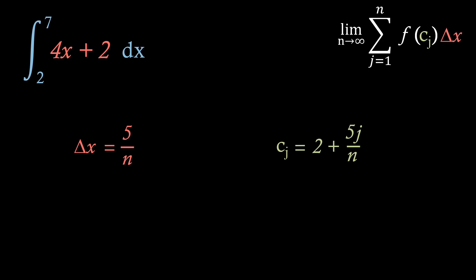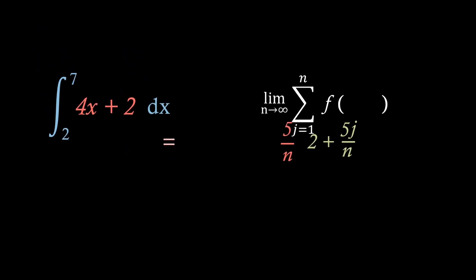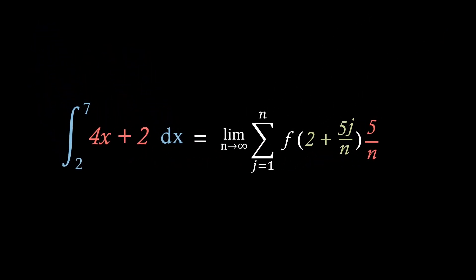Now, using these, we can now substitute back into our infinite sum, and we can start to evaluate our right-handed Riemann sum. So, we know our function f of x is 4x plus 2. So, if we just apply that to our f of cj, we see that we get 4 times 2 plus 5j over n plus 2, which we can then expand and simplify.